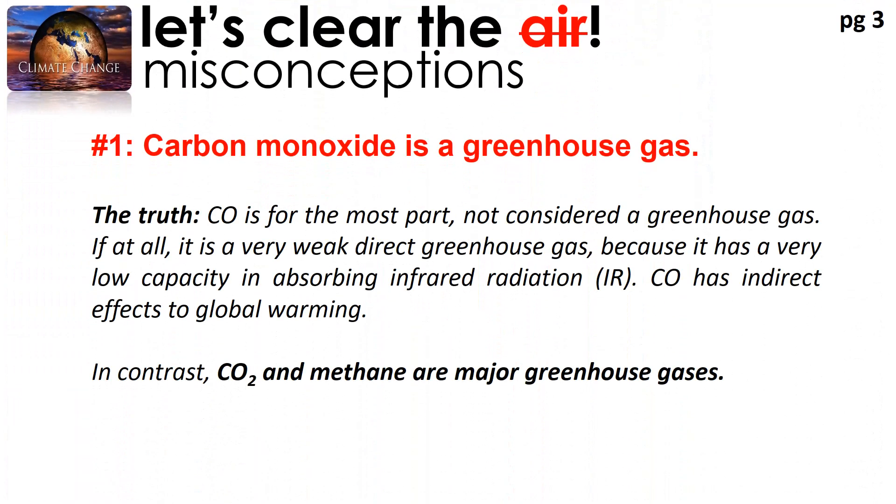So let's clear the air on some misconceptions that you may have. Now quite a number of you are familiar with carbon monoxide. You know that it is a pollutant. However, please note that it is not a greenhouse gas. It at the very most is just considered a very weak direct greenhouse gas. It actually has a very indirect effect to global warming, and that is because it has a very low capacity for absorbing infrared radiation, otherwise known as heat. In contrast, carbon dioxide and methane are major greenhouse gases. This is why your syllabus focuses on these two as the greenhouse gases that you need to know.